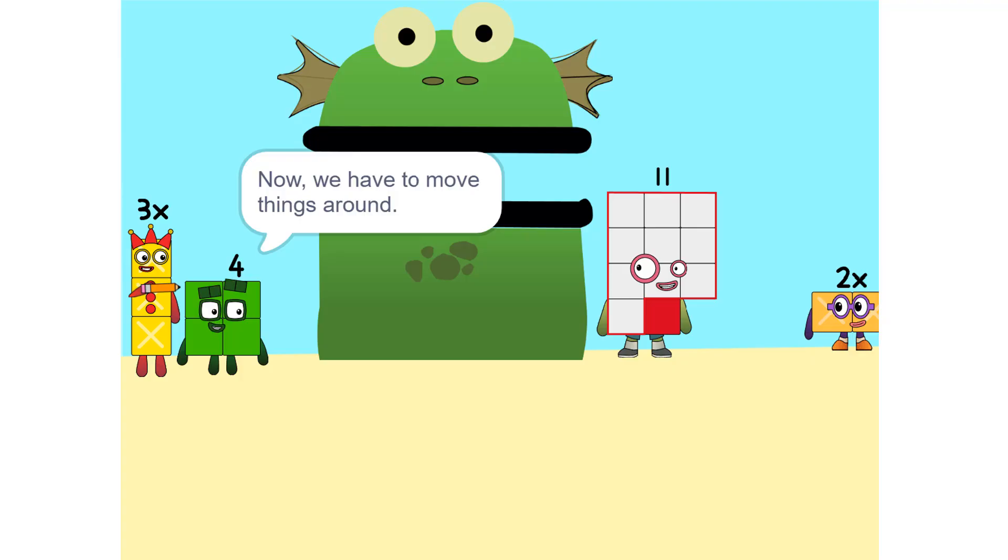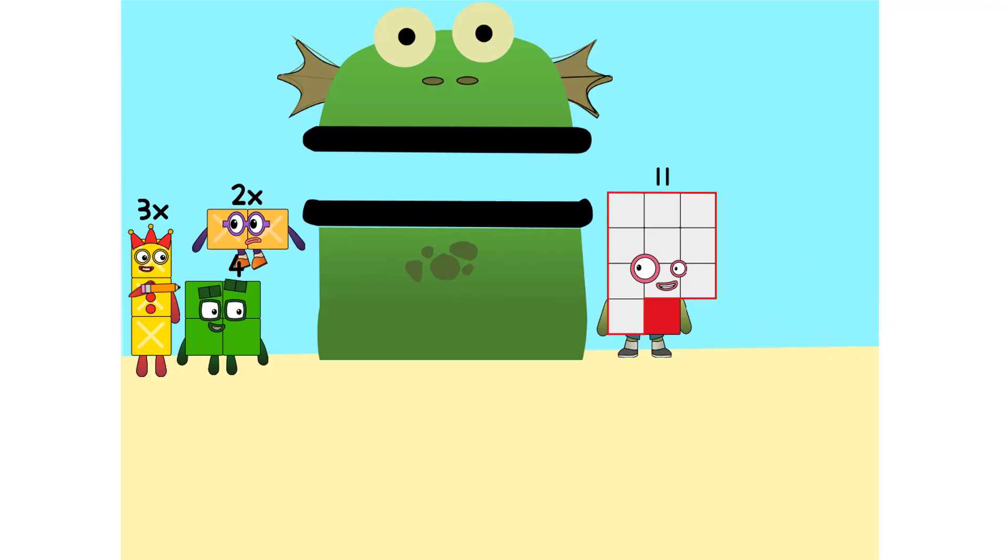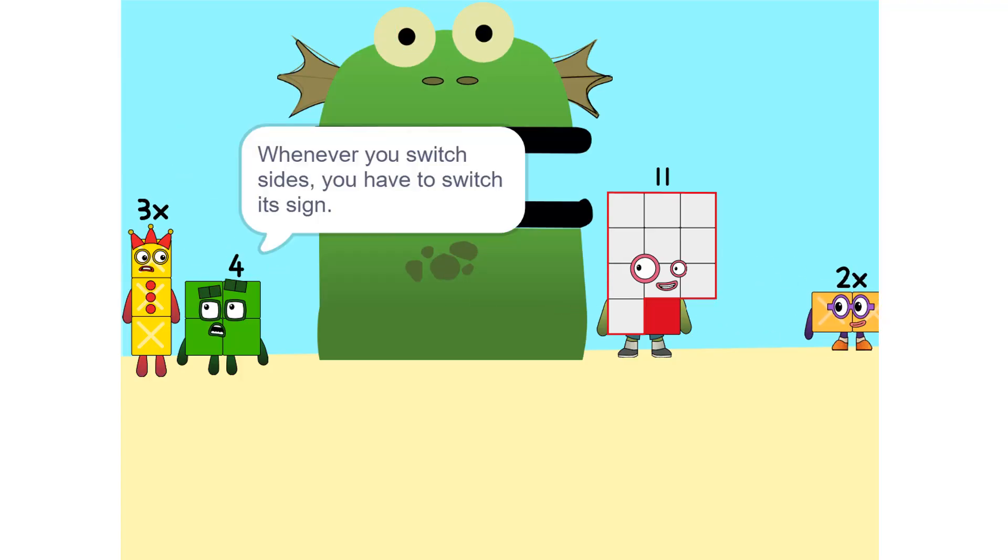Now, we have to move things around. We have to move this 2x to this side. Oh. So, 5x. Whenever you switch sides, you have to switch its sign. So if it's positive, it becomes negative and vice versa.